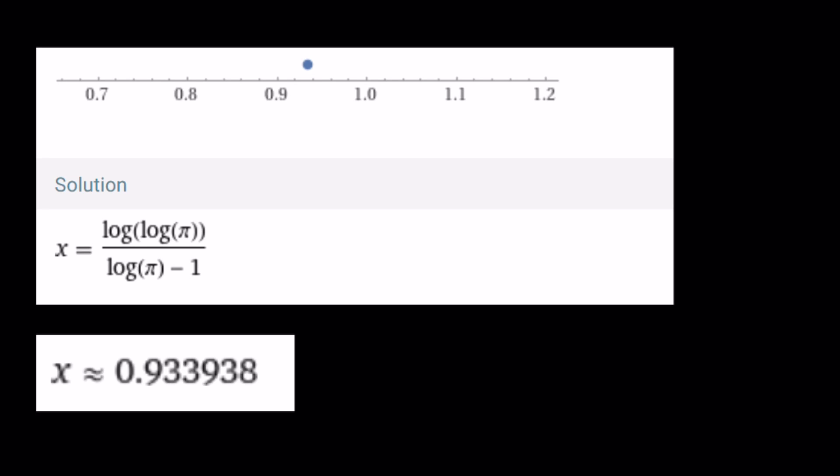And again, like I said earlier, you can definitely log both sides. You could even use base π because that's a valid base. Remember, for a base to be valid, it has to be greater than 0 and not equal to 1.